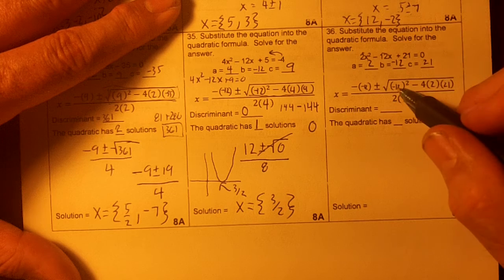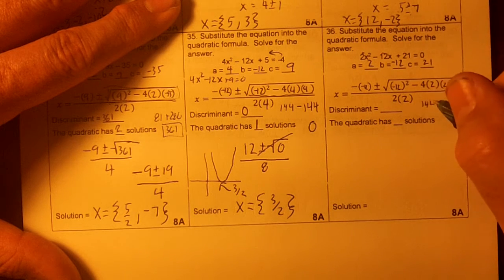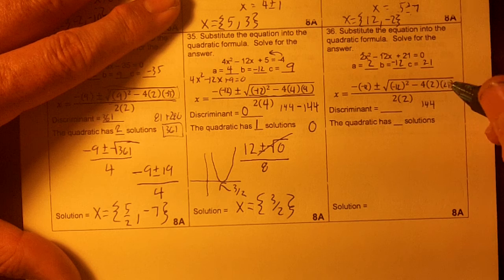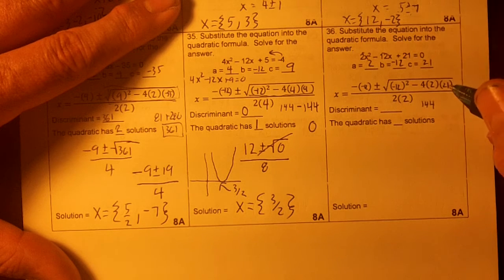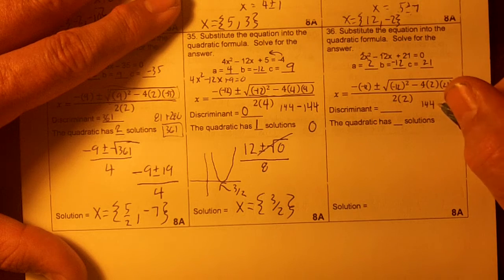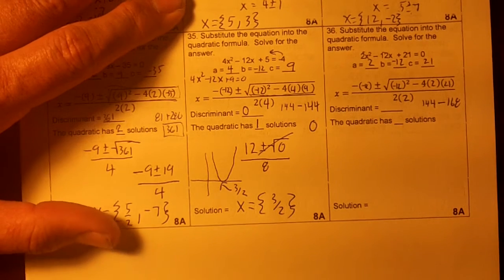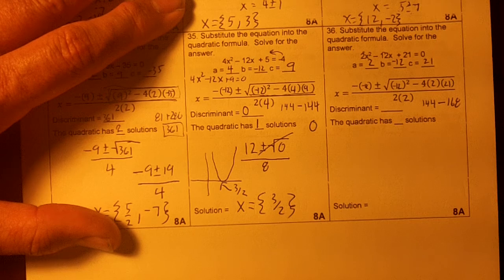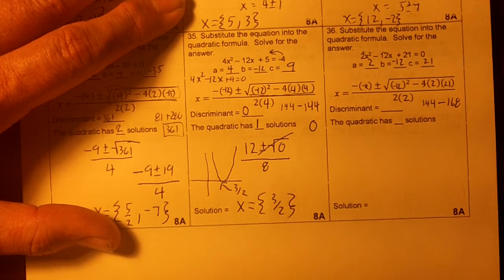Now then let's calculate this. Negative 12 times negative 12 is 144. And then 2 times 21 is 42. 42 times 4 is 168, I think. Let me make sure that's right. 4 times 2 times 21.